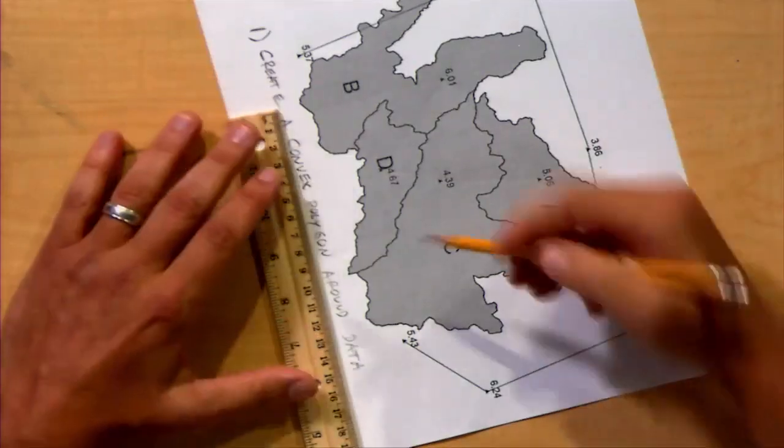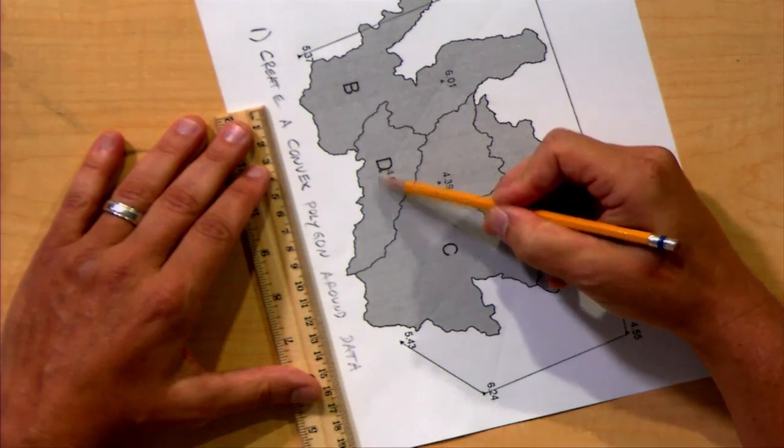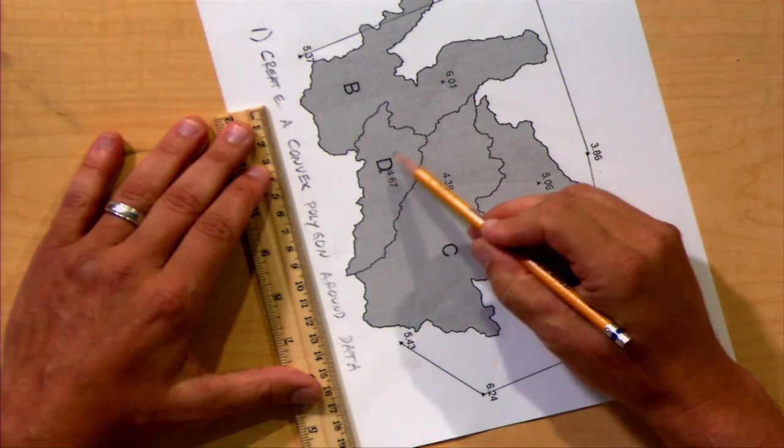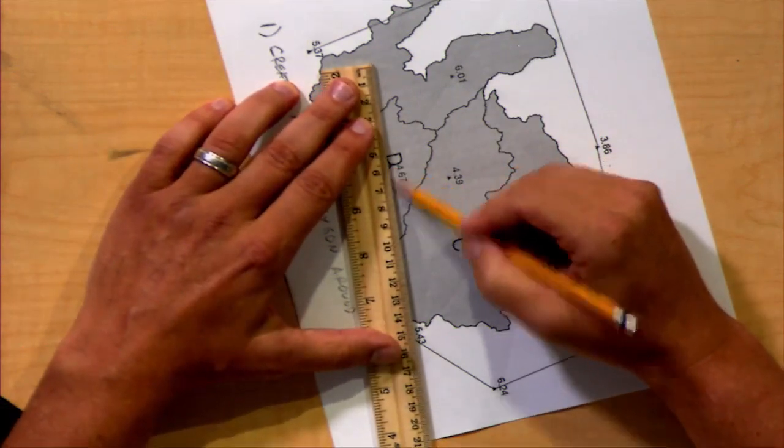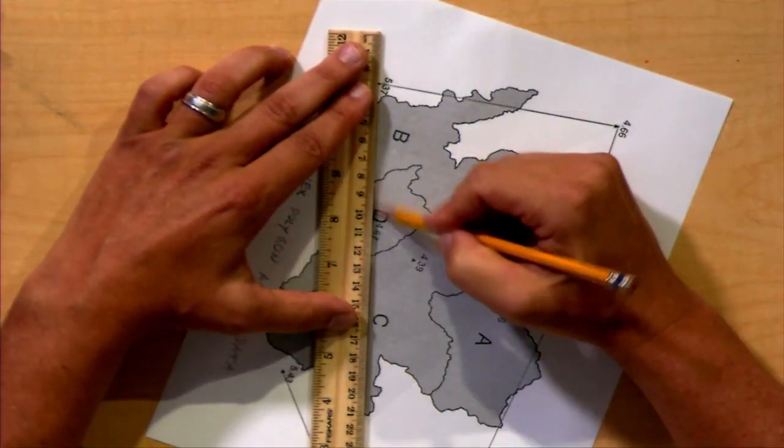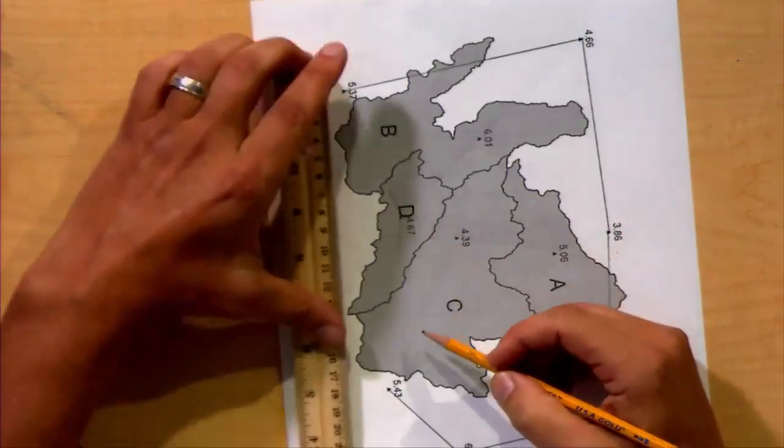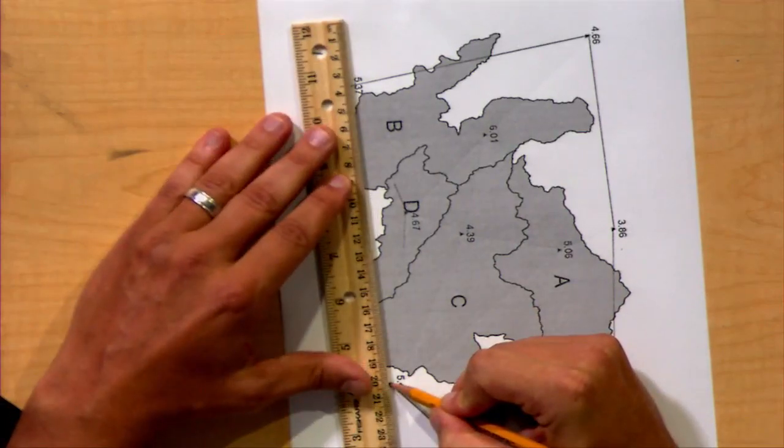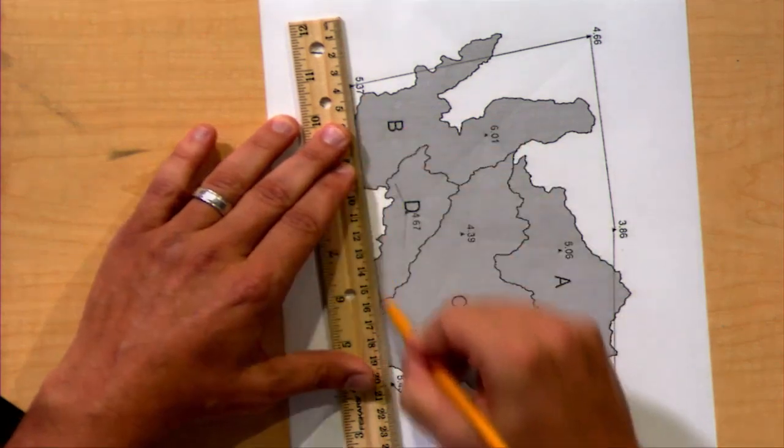And now we have a choice here. From 5.43, it seems like we might want to go to the 4.67. But notice if we do so, then we create an angle here. If I connect these two lines, if I connect this point and then this point, that angle created there is going to be greater than 180 degrees. So we're going to skip over the point 4.67 next to the letter D, and finish connecting all the way across from this 5.43 to the 5.37.